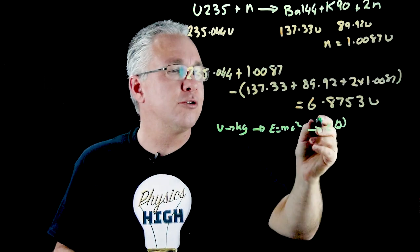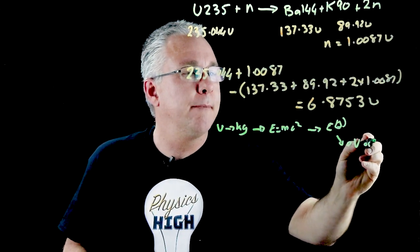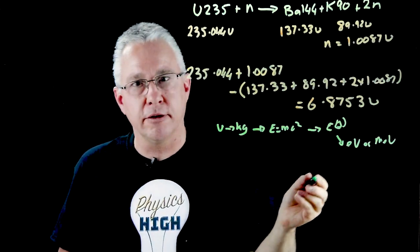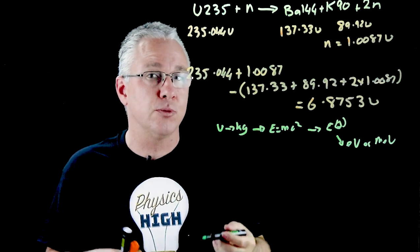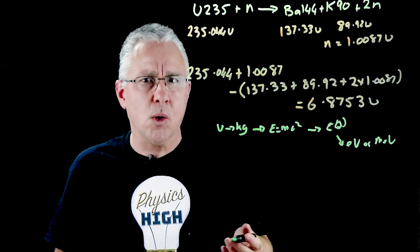Then I can convert the joules back to electron volts or mega electron volts by doing the conversion of joules to electron volts, which is 1.6 by 10 to the negative 19 joules. That's the long way.